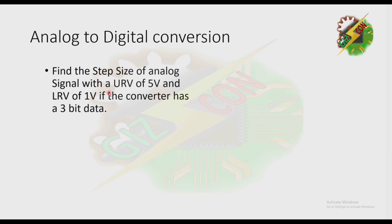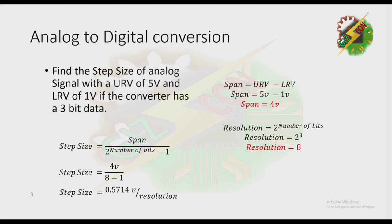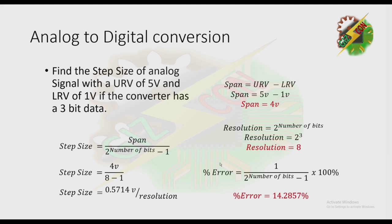Let's have this exercise: find the step size of an analog signal with a URV of 5 volts and LRV of 1 volt, if the converter has 3-bit data. To find the step size, we use the formula: Span over 2 raised to the number of bits minus 1. First we solve for the span, then the resolution. We get a step size of 0.5714 volts per resolution. The percent error is 1 over 2 raised to the number of bits minus 1, times 100%, which gives us 14% error.